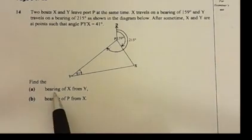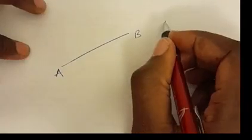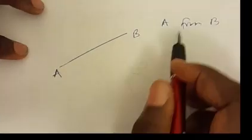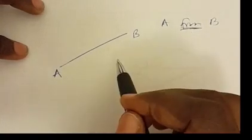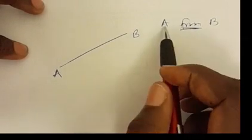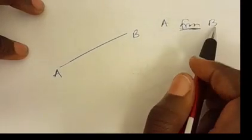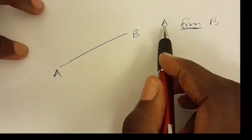For example, if you have two points A and B and they say find the bearing of A from B — the word 'from' is very, very important in bearings. When they say find the bearing of A from B, it means they want you to find the bearing of A whilst you are standing at B.